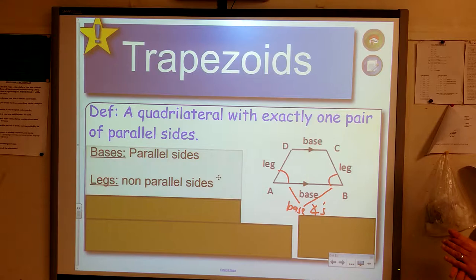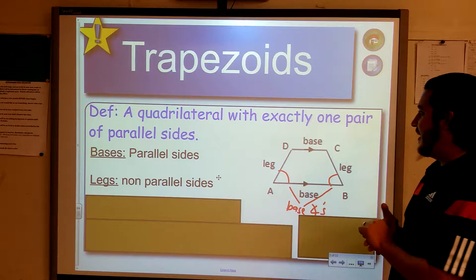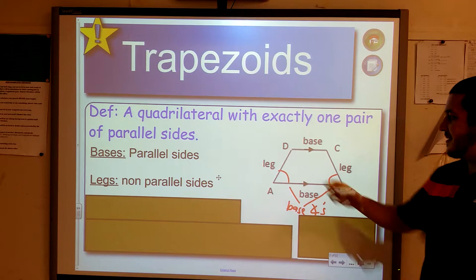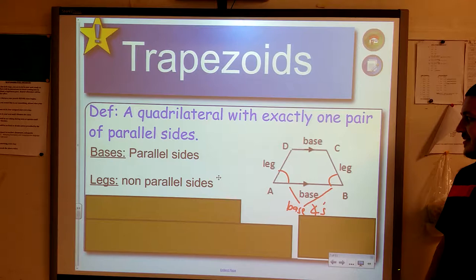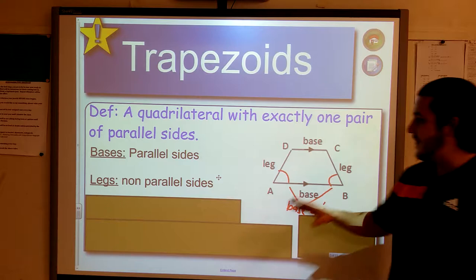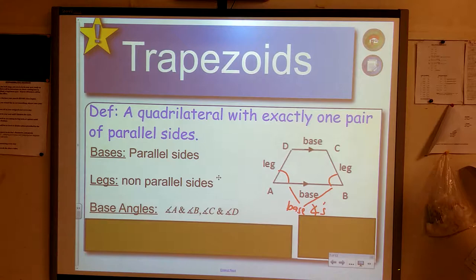You have two different types of sides that you can identify with the trapezoid. You have your bases, which are your parallel sides, and you have your legs, which are your non-parallel sides. Bases are parallel, legs are non-parallel. Bases are the big bambinos. These are the important guys. They're going in that same direction. They're never going to intersect if they continue on no matter what.